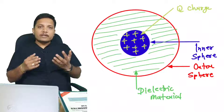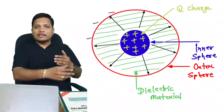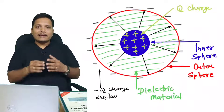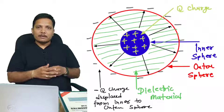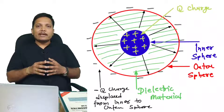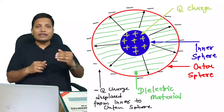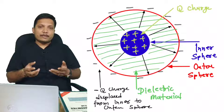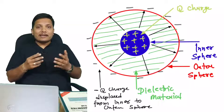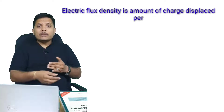He observed after some time that q amount of charge had displaced onto the outer metallic sphere. So he found that something was transferring charge from the inner metallic sphere to the outer metallic sphere. Based on that, he identified electric flux density — the amount of charge displaced per unit cross-sectional area.